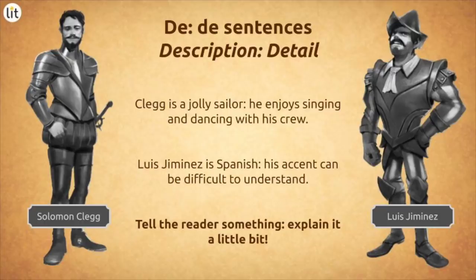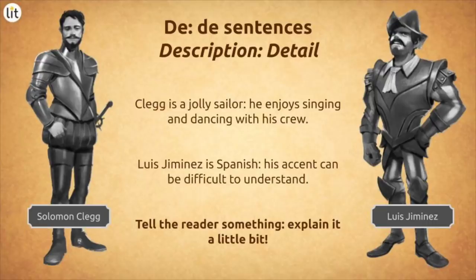Clegg is a jolly sailor. He enjoys singing and dancing with his crew. Louis Jimenez is Spanish. His accent can be difficult to understand, particularly if I'm reading him out. So what the first part of the sentence does is tell the reader something, and then what we see is a colon — a dot dot on the screen — and then it explains a little bit more about them. It tells us who the character is, colon, then tells us something else about them. Clegg is a jolly sailor, colon — he enjoys singing and dancing with his crew. Tells us he's jolly and then tells us why he's jolly. Louis Jimenez is Spanish, colon — his accent can be difficult to understand.